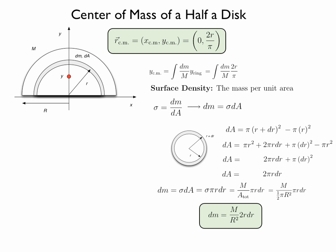With that expression we go back to the integral for the vertical position of the center of mass of the half a disk. Integral of dm over the mass of the disk times 2 r, the radius of a ring, over pi.